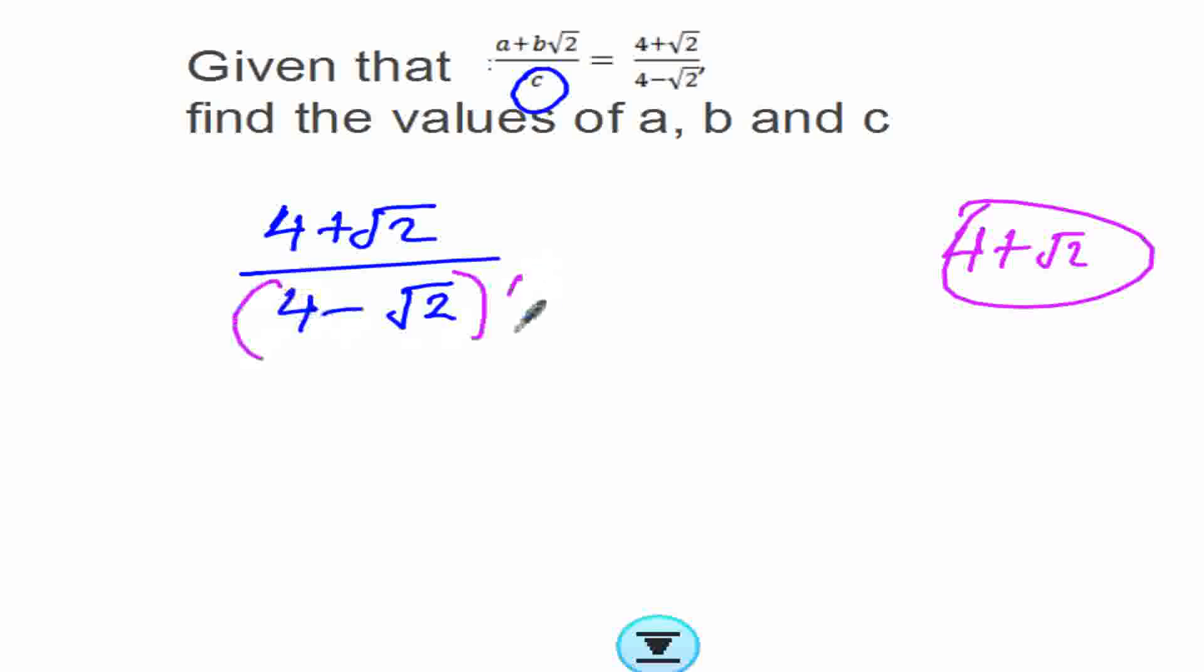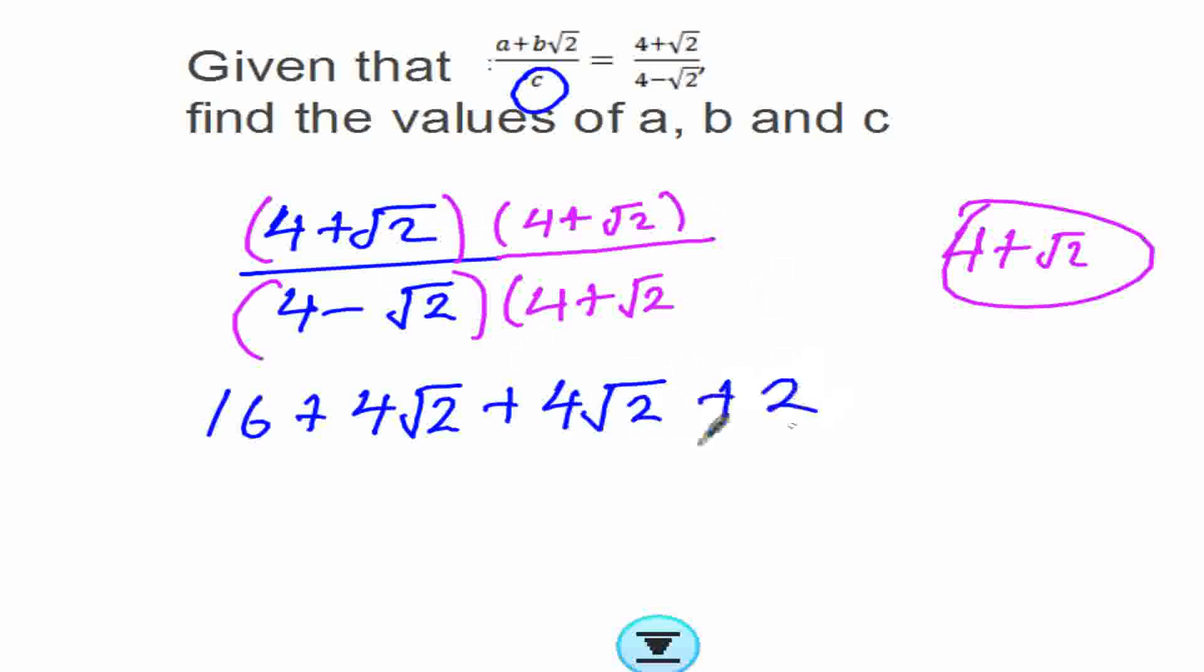Let's multiply by the conjugate, and what you do down you do the same up: 4 plus root 2. Then we start multiplying the brackets. This times that is 16, 4 times root 2 is 4 root 2, then root 2 times 4 is also 4 root 2, and root 2 times root 2 is 2.